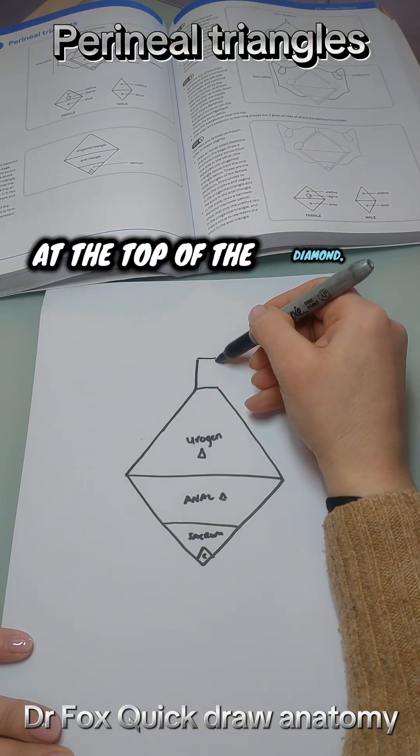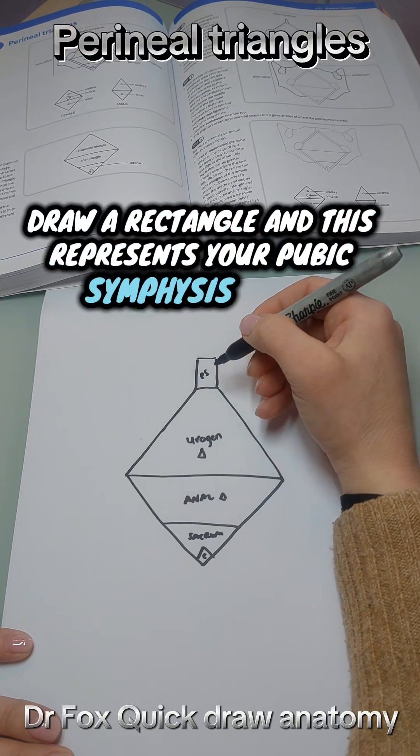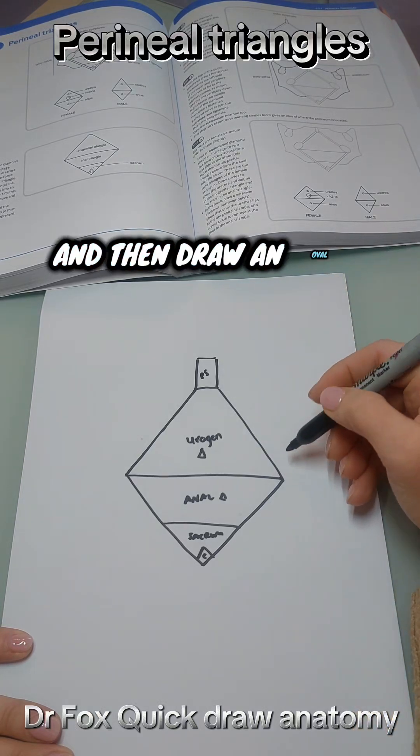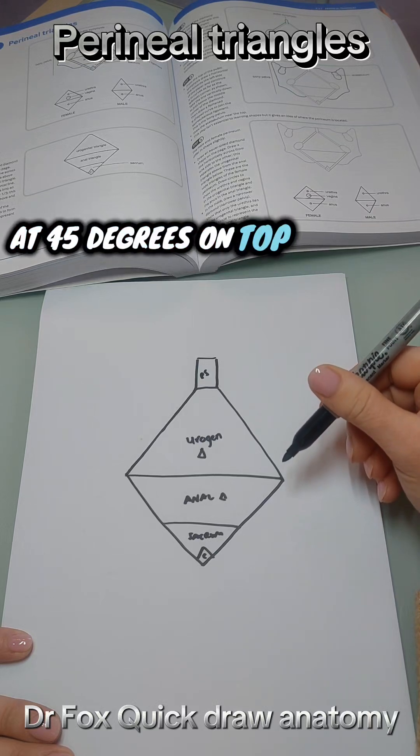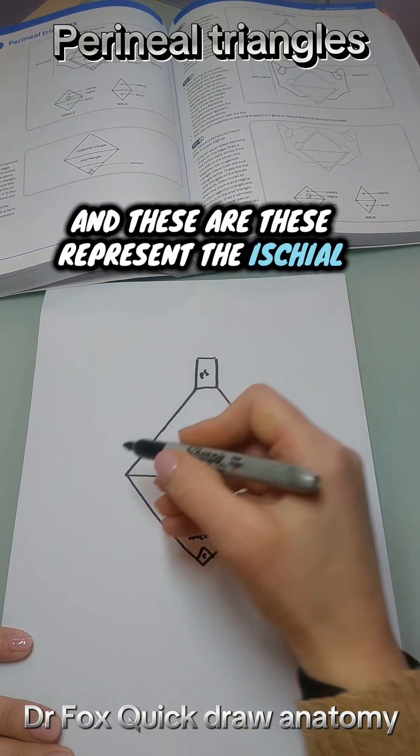At the top of the diamond, draw a rectangle and this represents your pubic symphysis bone. Then draw an oval at 45 degrees on top of each lateral point and these represent the ischial tuberosities.